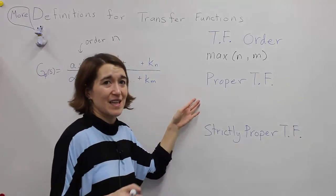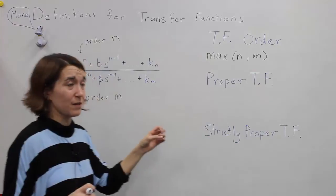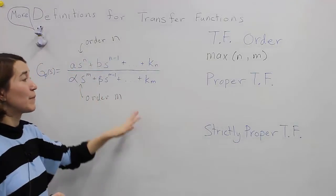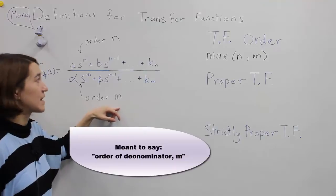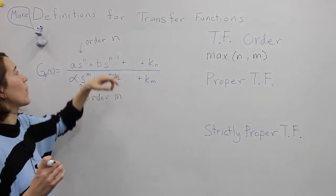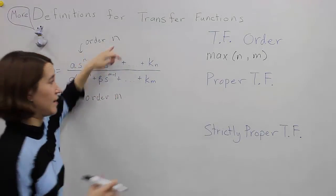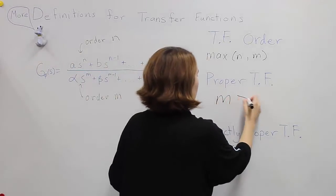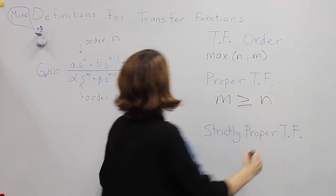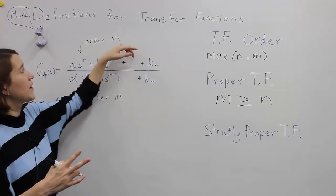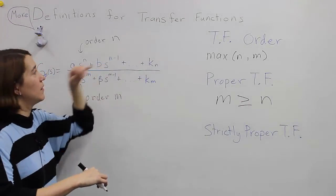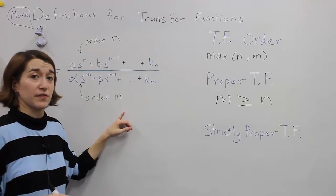The second definition is a proper transfer function, and that means that the power, the order of m, is higher or equal to that of n. So m is greater than or equal to n. So if m is two, n could be two, one, or zero, and it would still be a proper transfer function.